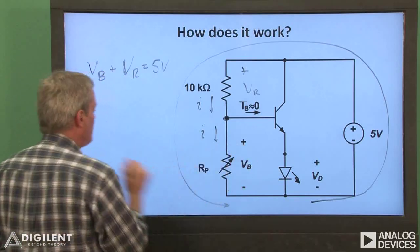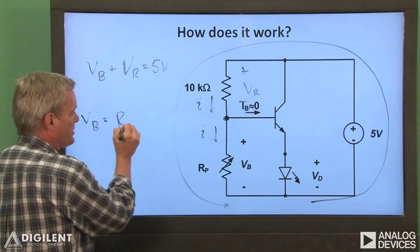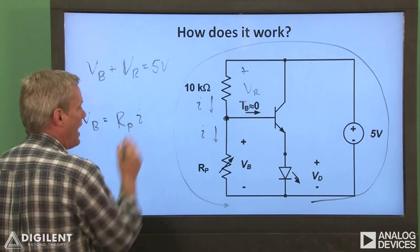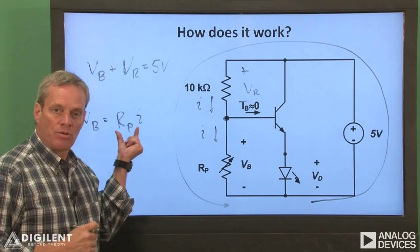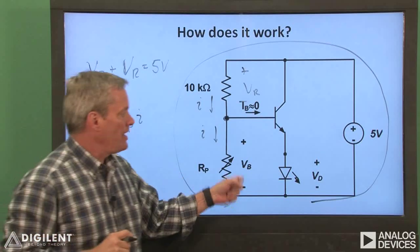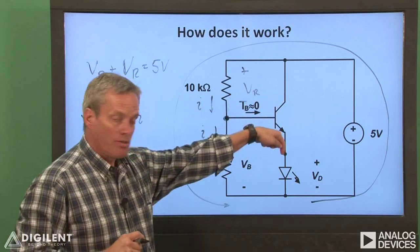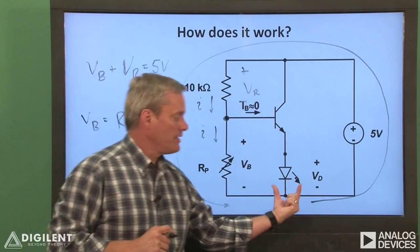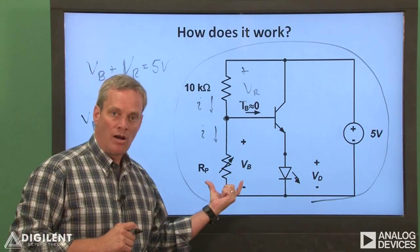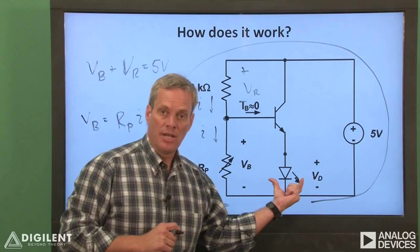Since the base voltage, V sub B, is equal to the resistor R sub P times I, if this resistance R sub P goes up, the base voltage increases, the BJT will allow current to flow, and the diode will turn on. So the process of making the room dark increases this resistance and turns on this diode.